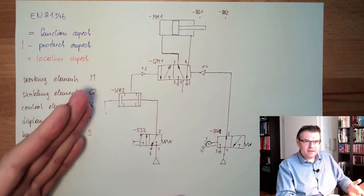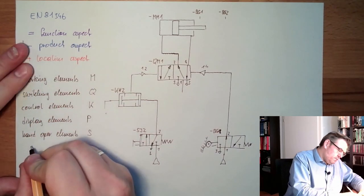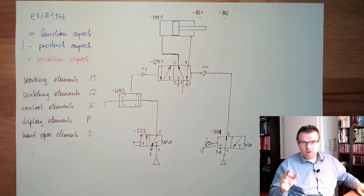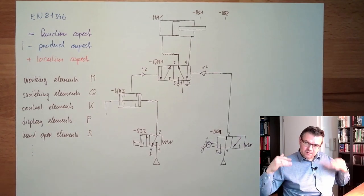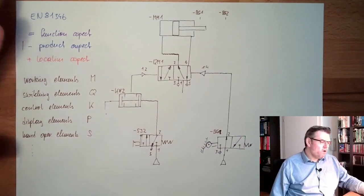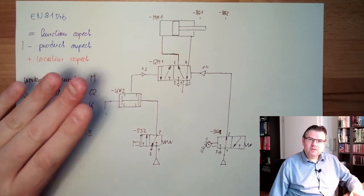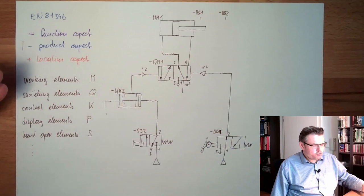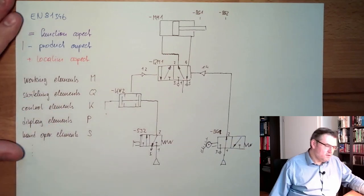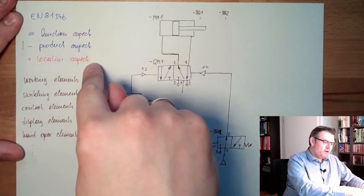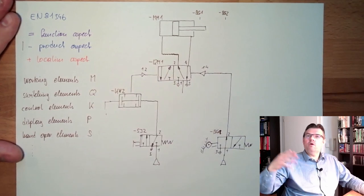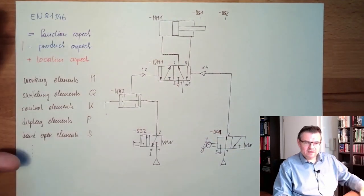There is a main letter. There are more. I will attach a file under this video you can download where you can see an overview. You don't need it from the top of your head. You should know the structure: minus product aspect, first letter showing what element this is.